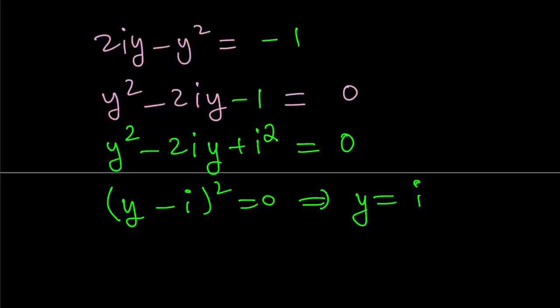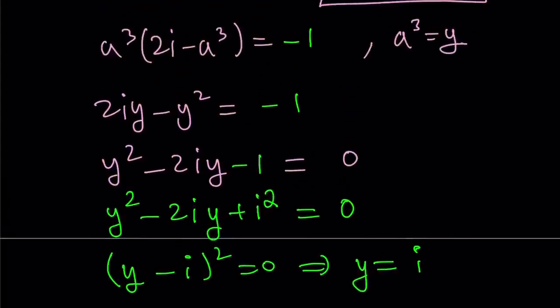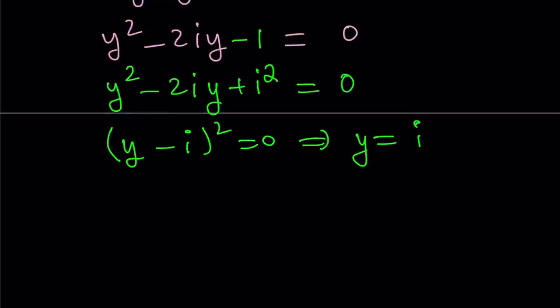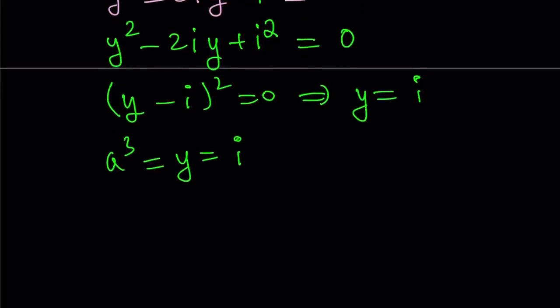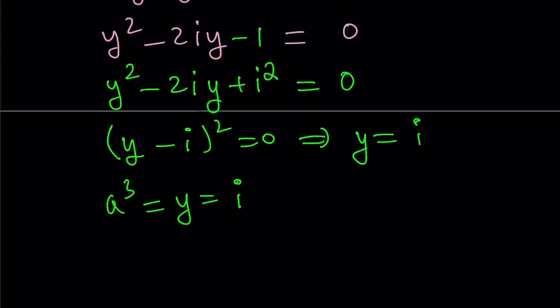But we're not looking for y, we're looking for x. Here, a³ is y, so let's go ahead and set a³ equal to y, which is i. So a³ equals i basically means that I'm supposed to find the cube roots of i. There's three of them. Let me find the first one because I only need one root, and once I find it, I'll proceed with the rest.